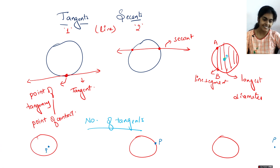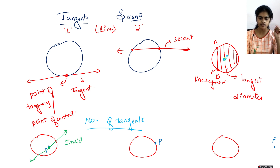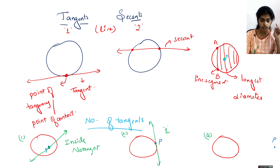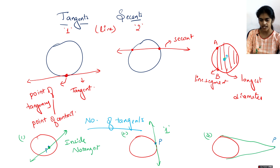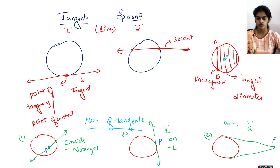From a point inside the circle, there is no tangent which I can draw — zero tangents. From a point on the circle, I can draw one tangent. From a point outside the circle, I can draw two tangents. So: inside the circle — zero tangents; on the circle — one tangent; outside the circle — two tangents.